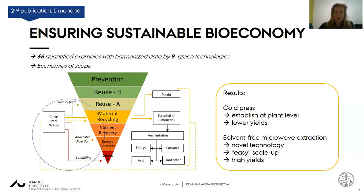We decided to conduct a review to identify the most sustainable techniques to extract these essential oils. We now have 66 quantified examples with harmonized data from nine green technologies. The two that stood out were cold pressing — already established for decades, providing lower yields but already integrated in juice plants — and the novel technology of solvent-free microwave extraction, which has relatively easy scale-up and provides very high yields in a short time. This was our second paper.